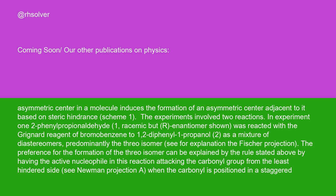The experiments involve two reactions. In experiment 1, 2-phenylpropionaldehyde (1, racemic but R enantiomer shown) was reacted with the Grignard reagent of bromobenzene to give 1,2-diphenyl-1-propanol-2 as a mixture of diastereomers, predominantly the threo isomer.